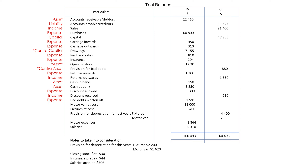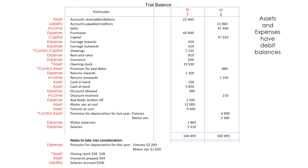Cash in hand — asset; cash at bank — asset; discount allowed — expense; discount received — income; bad debts written off — expense; motor van at cost — asset; fixtures at cost — asset; provision for depreciation for last year — contra asset. Assets and expenses have debit balances.